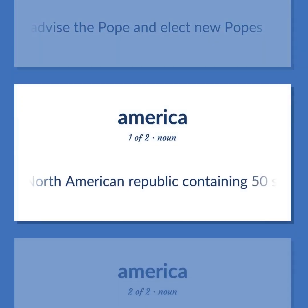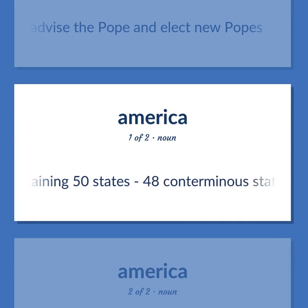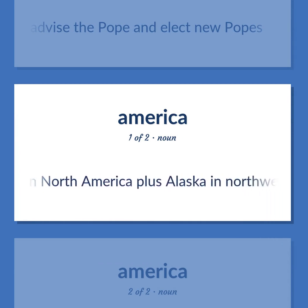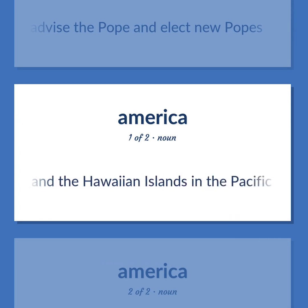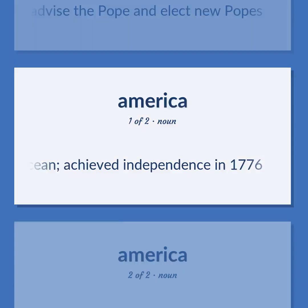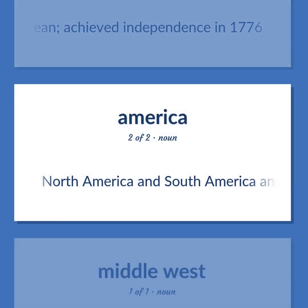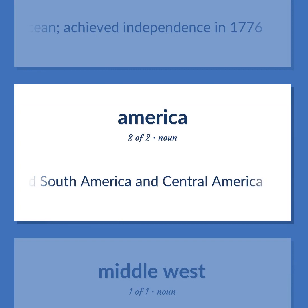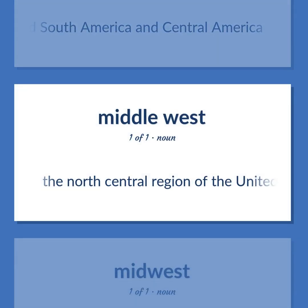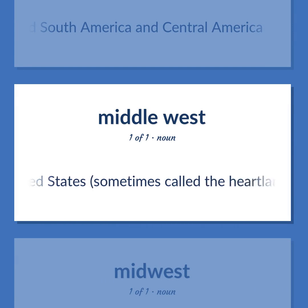United States: A North American republic containing 50 states — 48 contiguous states in North America plus Alaska in northwest North America and the Hawaiian Islands in the Pacific Ocean. Achieved independence in 1776. The Americas include North America, South America, and Central America. The Midwest is the north central region of the United States, sometimes called the Heartland or the Breadbasket of America.